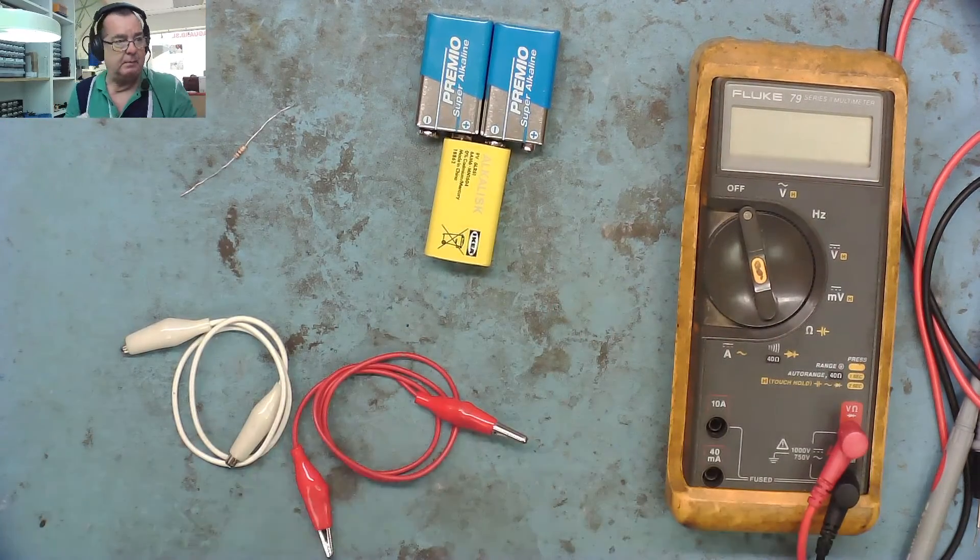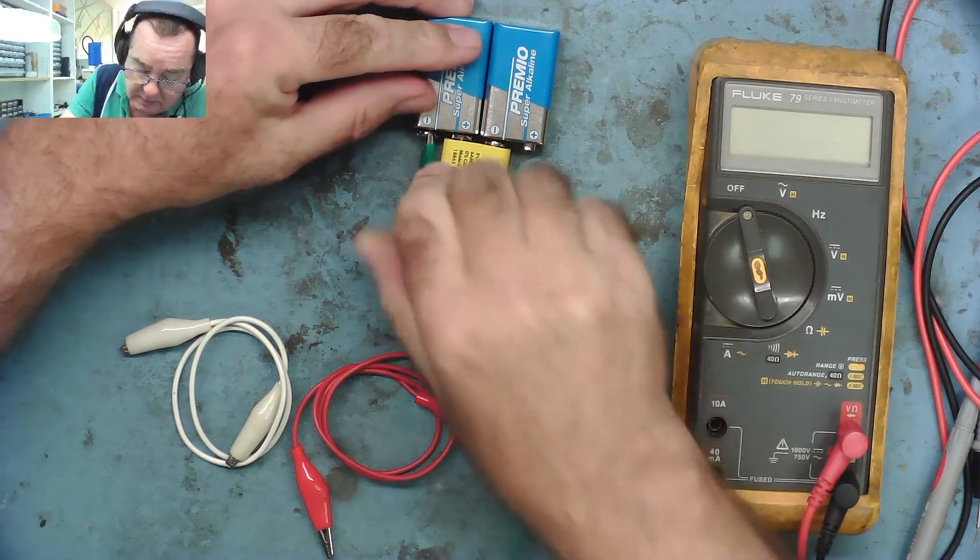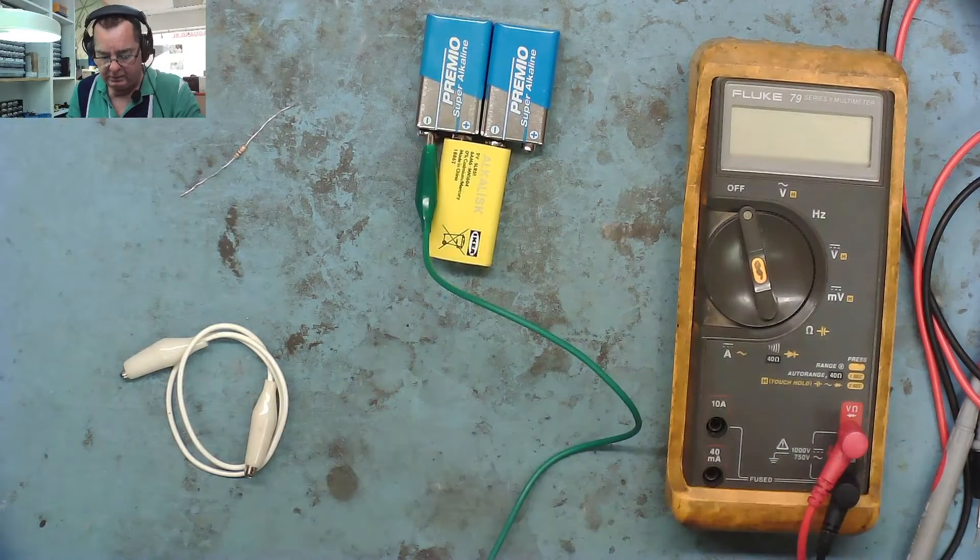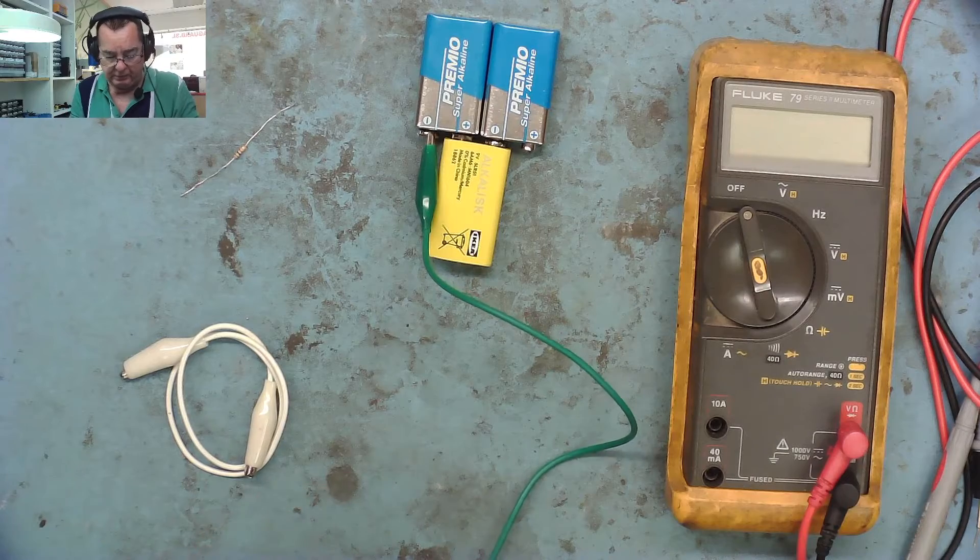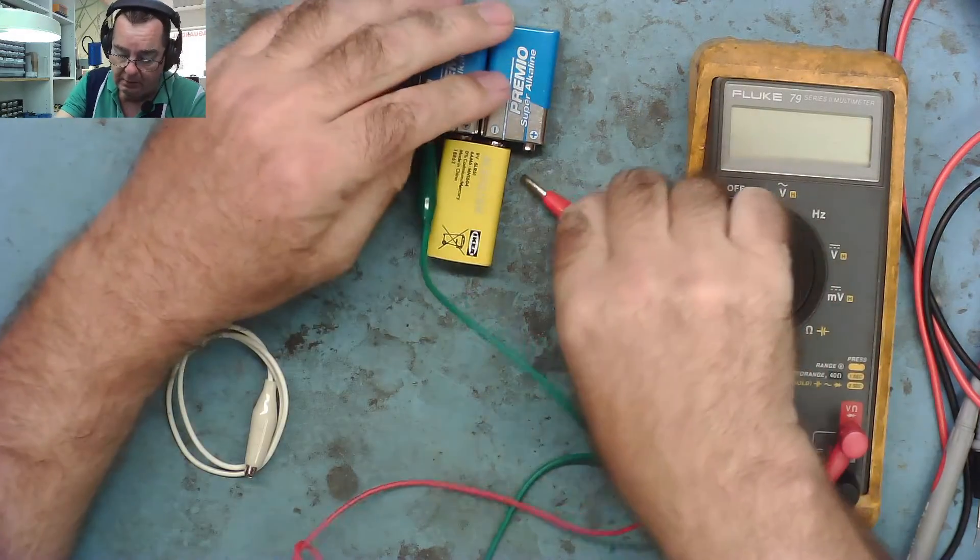From this we're going to take a crocodile clip lead and put it onto the negative terminal, and we're going to take another lead and put this onto the positive terminal. So we now have the two leads attached.